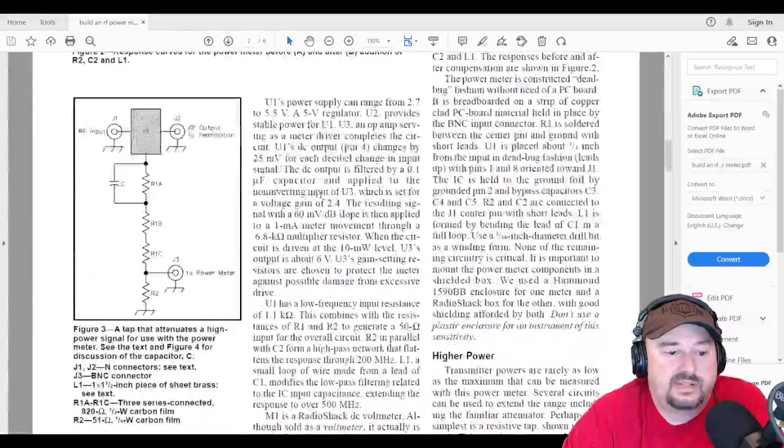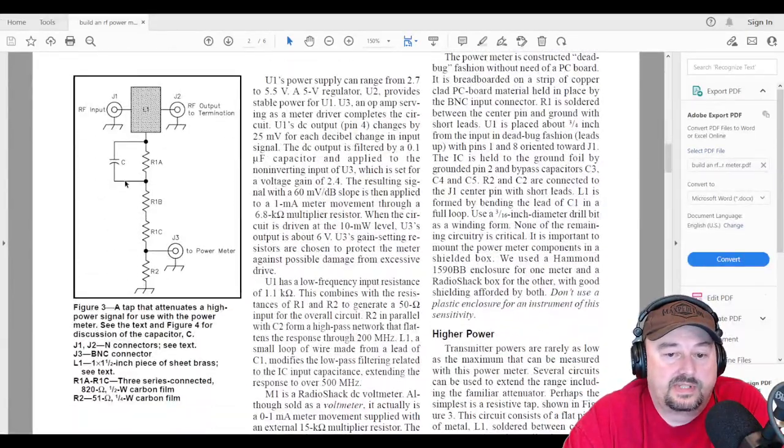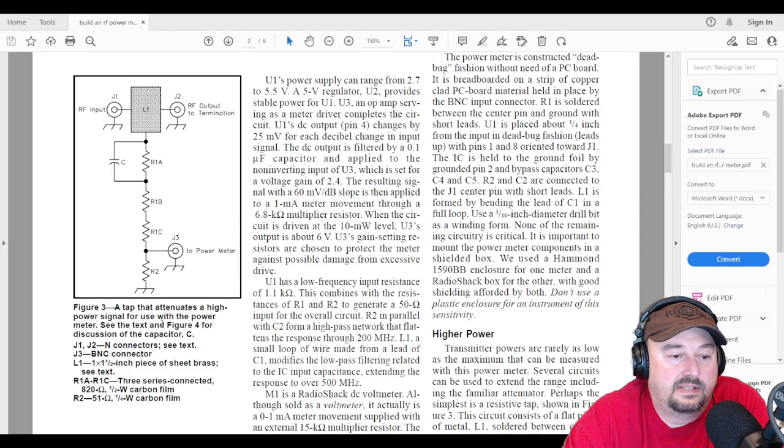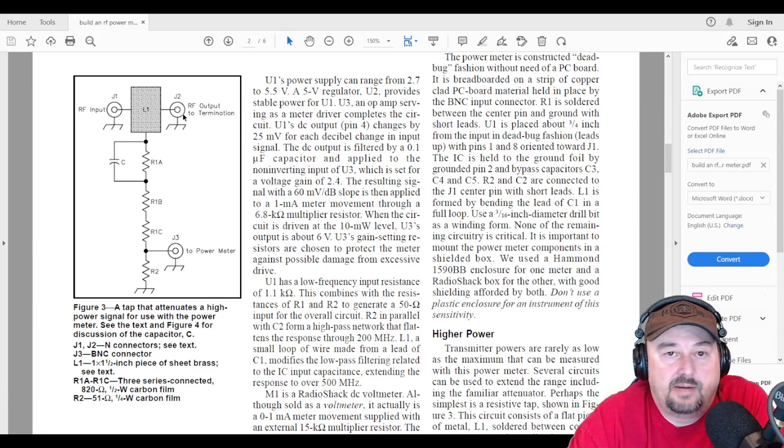Scrolling down, here's the schematic for the power tap here on the left-hand side. It says, Figure 3, a tap that attenuates high-power signal for use with the power meter. See the text in Figure 4 for the discussion of the capacitor, labeled C, which is right here. So here you see J1 and J2, and they're your RF connectors, your input and output. In this project, they use N-type connectors. We're going to use SO239.